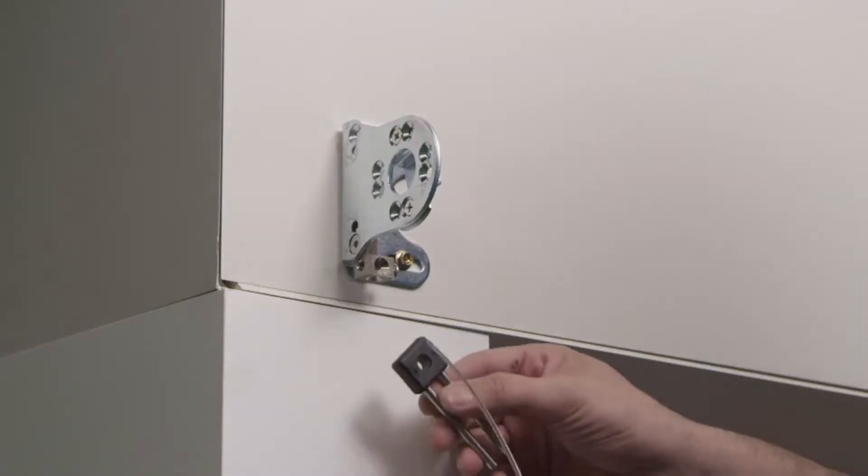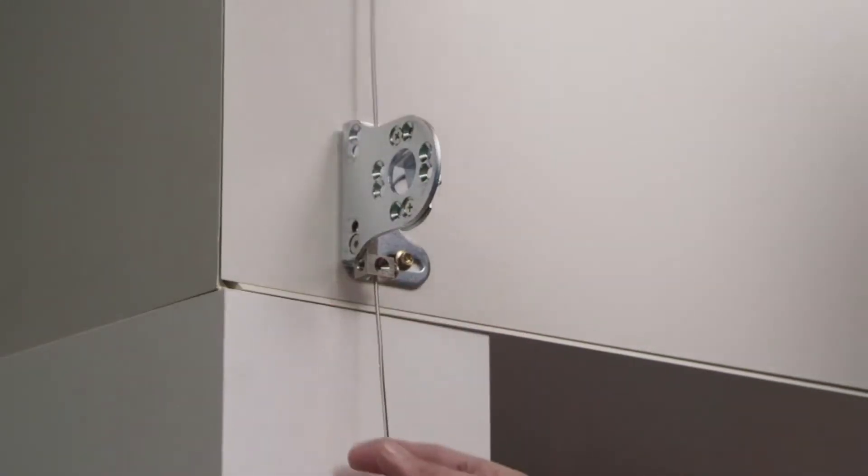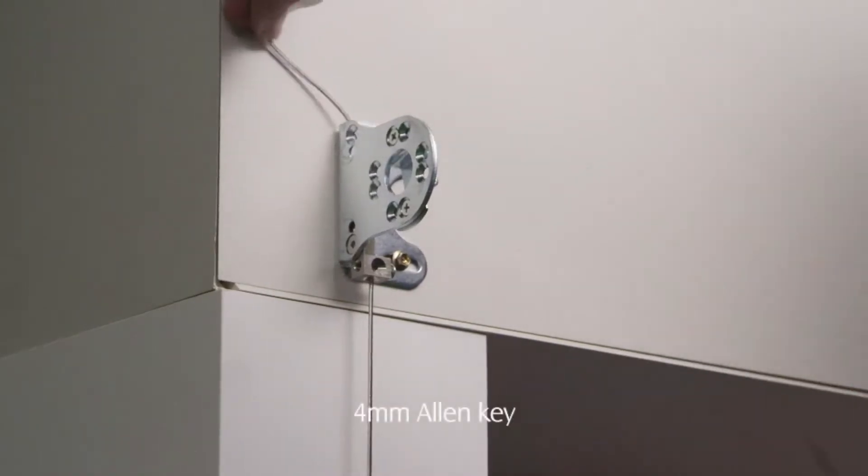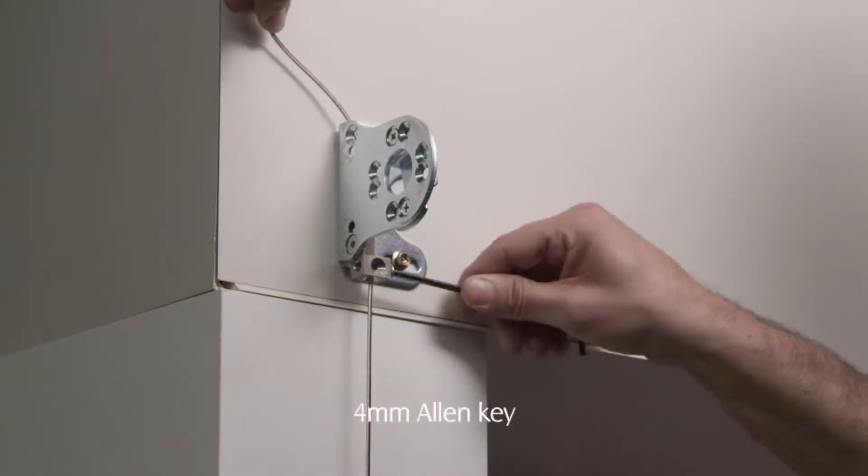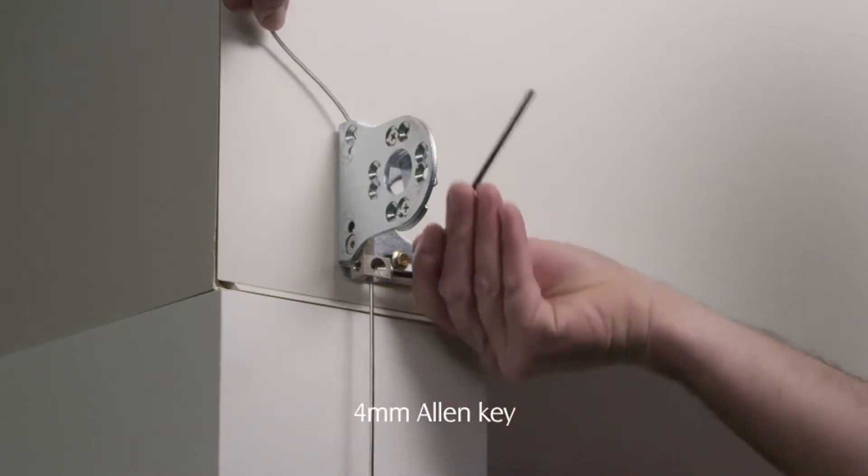Feed cable through the top cable brackets. Pull the cable tight. Lock off with a 4mm Allen key. Ensure the grub screw is securely tightened.